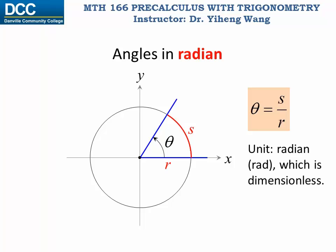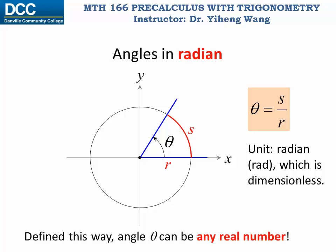What is the advantage of defining angles in radians? When an angle is defined this way, it can be interpreted as a pure number. In fact, what you see here is an angle of one, since the length of s equals the radius r. Also defined this way, angle theta can be any real number — positive, zero, or negative — and this agrees with our knowledge of real numbers.